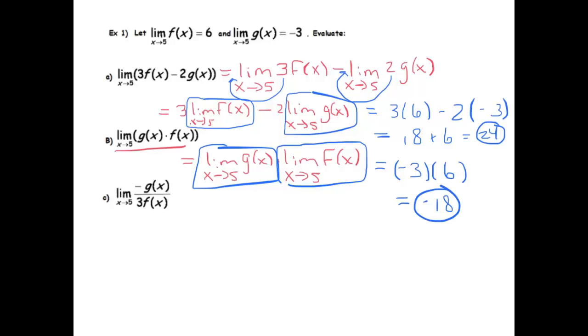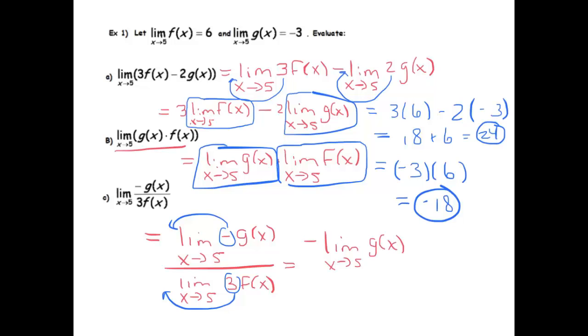All right, let's finish with this last one. We've got the limit of a quotient. So I'm going to use the quotient rule. I can write that as the limit as x goes to 5 of that numerator, which is negative g(x), divided by the limit as x goes to 5 of that denominator, which is 3 times f(x). And now I can use that constant property by moving that negative out front, moving that 3 out front, to get me negative the limit as x goes to 5 of g(x), divided by 3 times the limit as x goes to 5 of f(x).